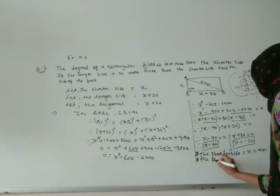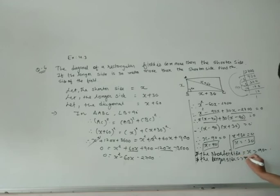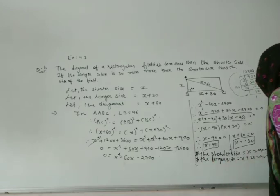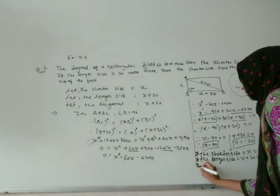What is the longer side? The longer side will be in the form of x plus 30, so that will be 90 plus 30, which becomes 120. And the last one we have to write is the diagonal.